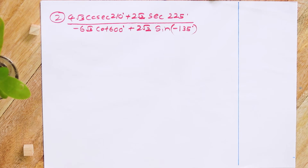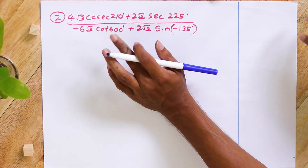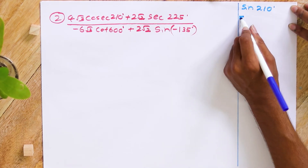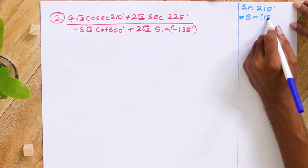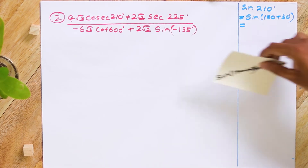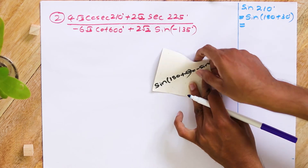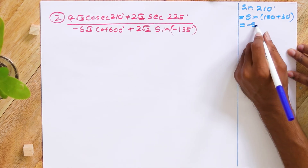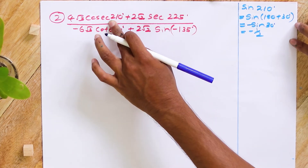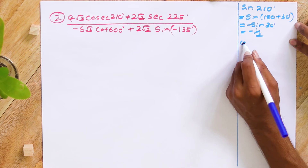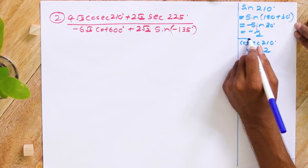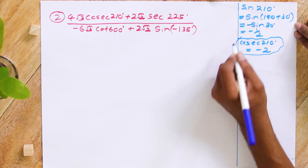Instead of finding cosec 210° directly, since cosec is the reciprocal of sine, I'll find sine 210°. Sine 210° = sine(180° + 30°), and since sine(180° + θ) = -sin θ, this gives -sin 30° = -one half. Therefore cosec 210°, the reciprocal of sine 210°, is -2.